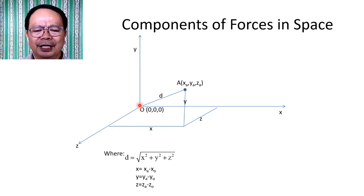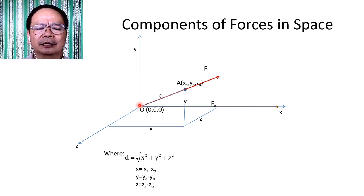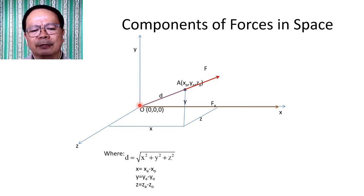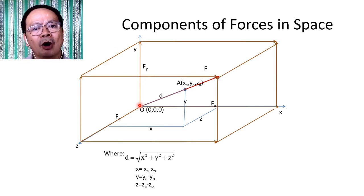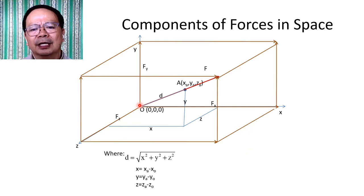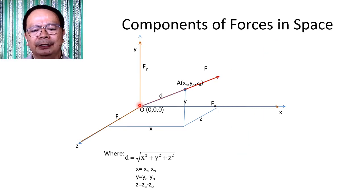Let us assume that on this point O, there is a force directed in this direction. This force will have a component along the X direction defined by F_x, a component in the Y direction defined by F_y, and a component in the Z direction defined by F_z. The components of the force will be like the sides of a rectangular box formed when the force is resolved into its components F_x, F_y, and F_z, just as shown in this illustration.